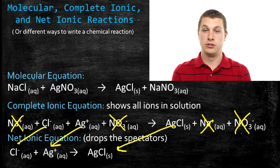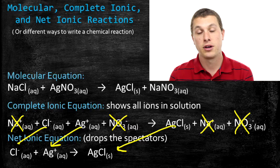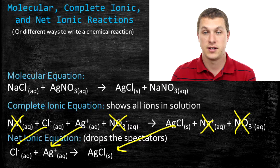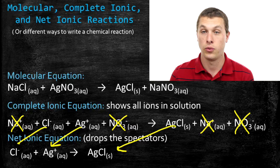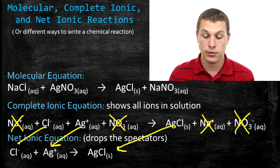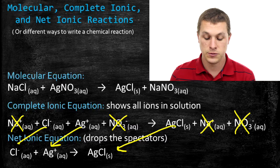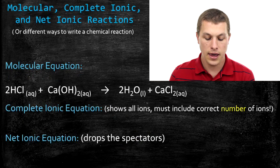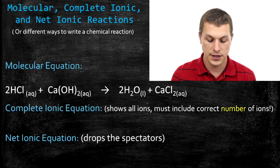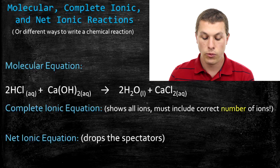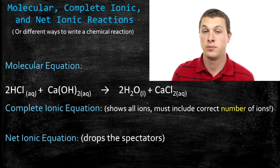Now that I've introduced what these three equations look like, I'm going to go through step by step how you can write them. Typically, you'd be given the molecular equation and asked to write the complete ionic and net ionic equations. You need to be able to identify what things should split up and what things shouldn't. So here we have a reaction between hydrochloric acid (HCl) and calcium hydroxide (Ca(OH)₂). When those combine, they form water and calcium chloride — that's an acid-base reaction.